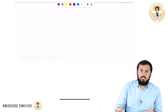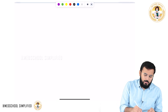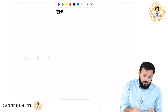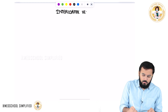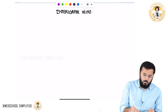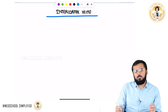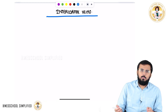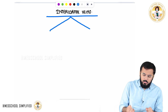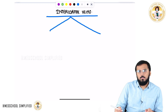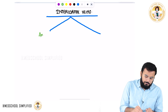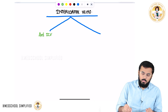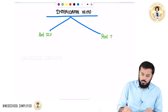Hello guys. Now we shall be discussing about the intercostal veins. There are two different types of intercostal veins, same like arteries. We have anterior intercostal artery and posterior intercostal artery, and even veins we have two: the anterior intercostal vein and the posterior intercostal vein.